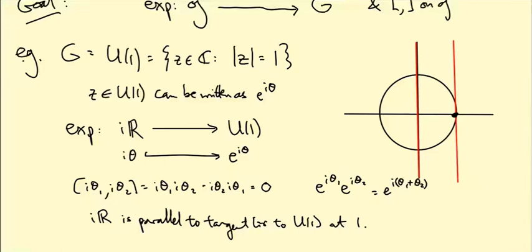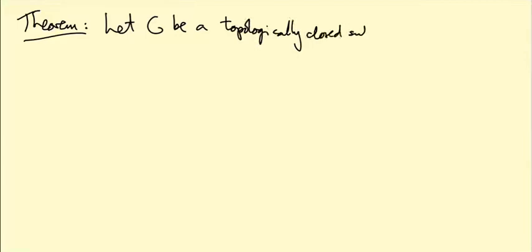Let me state the theorem now that we're going to work towards. I'm not going to prove it in this video. I'm going to just make some remarks in this video after I've stated the theorem because it's going to take some preparation. So let G be a topologically closed subgroup of GL(n,R). In other words, G is a group of matrices. And I'll talk about what topologically closed means as a remark after the theorem.